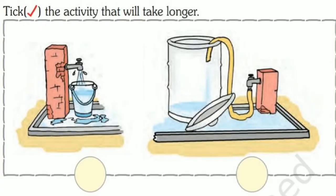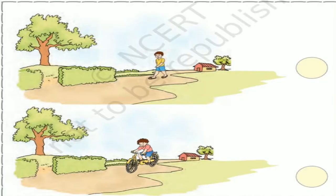Next, tick the activity that will take longer. In the picture, a bucket is being filled and a drum is being filled with water. Which takes less time to fill — bucket or drum? The bucket gets filled quickly compared to the drum. The drum takes longer to fill, so we tick the second picture — filling the drum. Next, a boy is walking and another boy is riding a bicycle. Who will reach quickly? The boy riding the bicycle will reach fast. Who will take longer? The boy who is walking — so we tick the first picture.